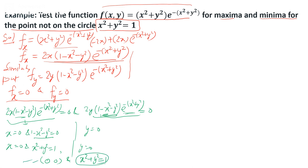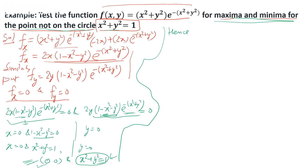According to the given condition in the problem, we have to find maxima and minima for points not on the circle x²+y²=1. So we discard that condition, and hence (0, 0) is the only stationary point.